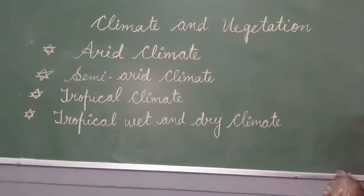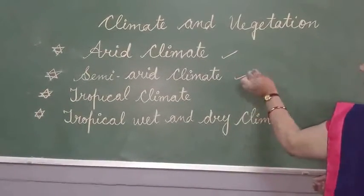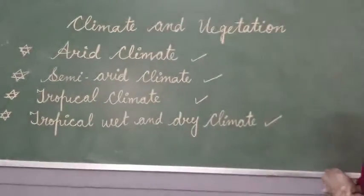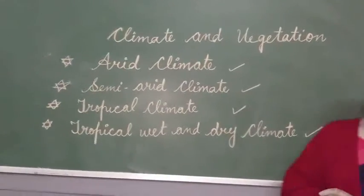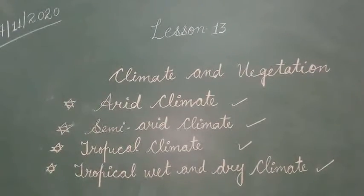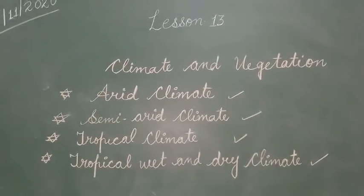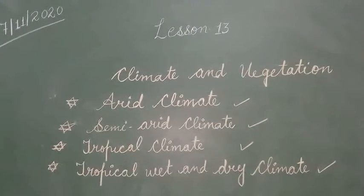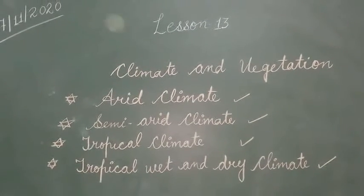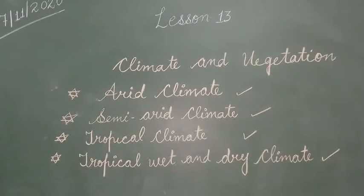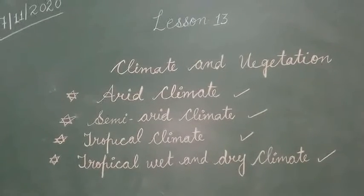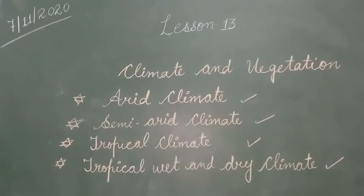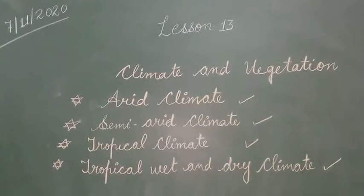Today we will know about arid climate, semi-arid climate, tropical climate, and tropical wet and dry climate, and the areas where we find these types of climate. First, we will know about arid climate. High temperature and low rainfall are the specific features — special features — of the arid climatic zone. The western part of the country, including a large part of Rajasthan, falls under this region.